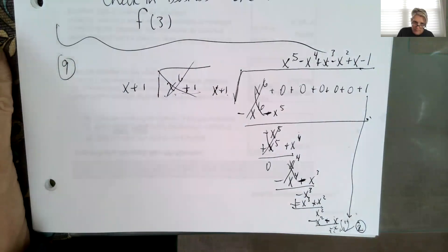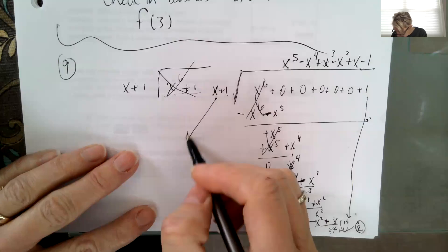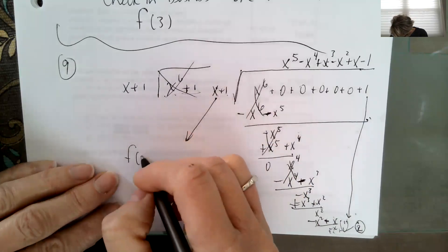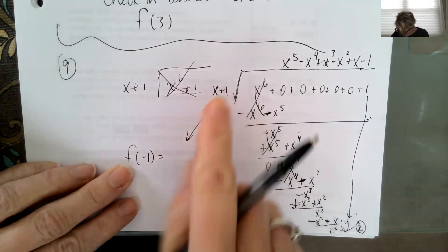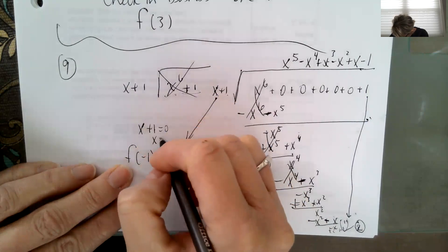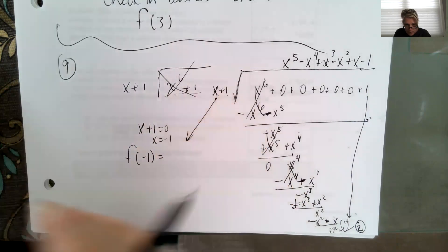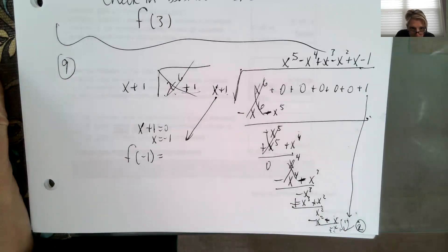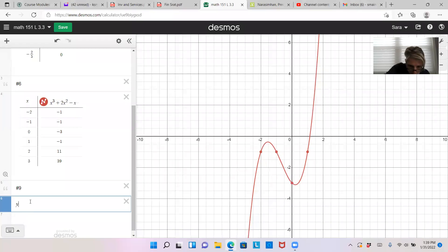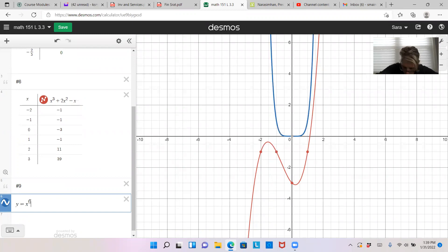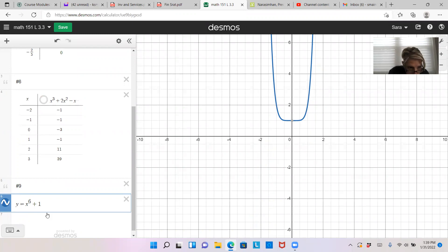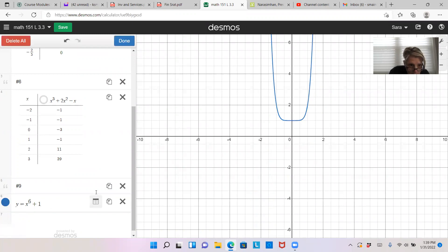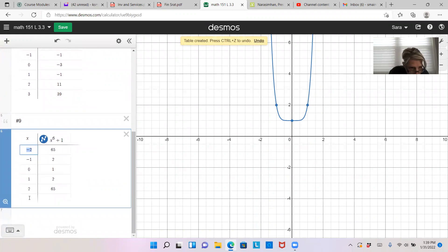So we're checking if this is a factor by looking at f of negative 1, since x plus 1 equals 0 means x equals negative 1 should be a zero. I don't think it is because we have a remainder of 2. In Desmos, typing y equals x to the 6th plus 1 shows no real zeros at all — it doesn't cross the x-axis. Turning on the table and putting in negative 1 gives 2, just like we found. Number 9 would be the trickiest of the tricky.